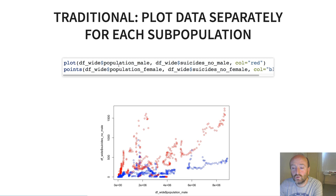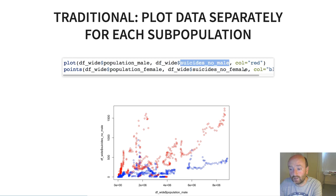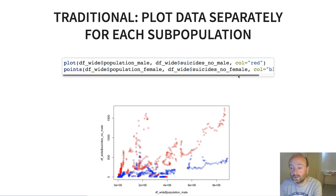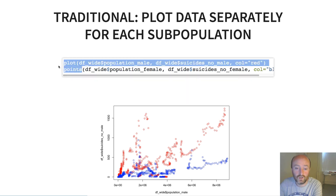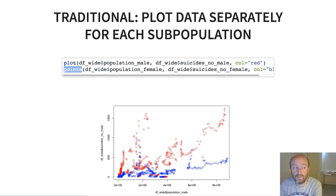The way to plot different colours for different groups in the traditional approach is to effectively call plot twice, once for each subpopulation. In R, you call plot with the male population versus the male suicide count coloured red. Then you call points afterwards for the female population versus the female suicide count. In Python or MATLAB you'd call plot again, but the same principle applies — you overlay the second plot on the first.